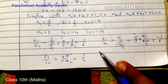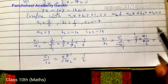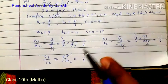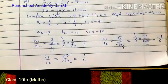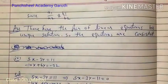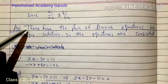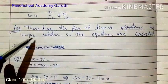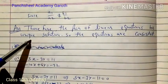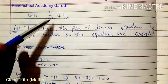So a1/a2 = 1/6 and b1/b2 = -1/6. The first two ratios are not equal — a1/a2 ≠ b1/b2. When the first two ratios are not equal, we don't even need to compare the third. Therefore, a1/a2 ≠ b1/b2.